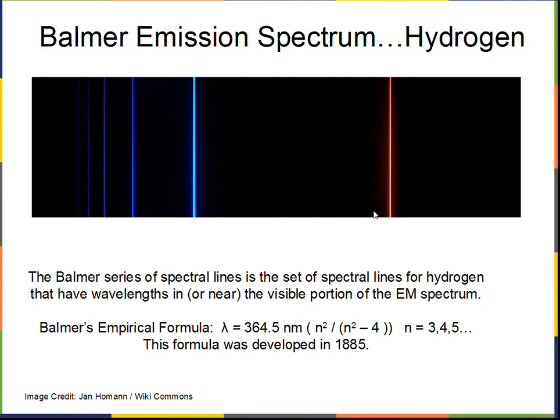How do these spectral lines originate? Why is there this pattern: wide spacing, little narrower, little narrower, continuing out into the ultraviolet? The Balmer emission spectrum in the visible range of wavelengths needed an explanation.